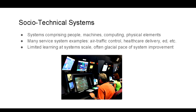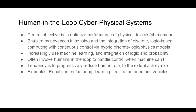Socio-technical systems is a topic that's been studied for decades. These are viewed as systems comprising people, machines, computing, and physical elements — for example, an air traffic control system. Key points are that these systems often are not designed for rapid and comprehensive learning. We often see a glacial pace of system improvement. It's not that they don't learn at all — they do, for example, from accident analyses — but the emphasis is often on performance and reliability, as opposed to rapid evolution toward higher states of fitness.